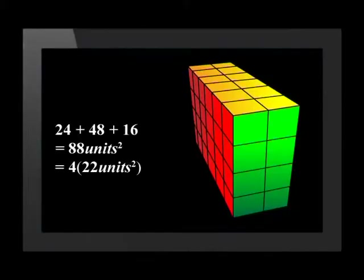So doubling all the dimensions of the original structure creates a surface area that is 4 times more than the surface area of the original structure. What is interesting here is that areas are measured in square units. The total surface area is a squared measurement. Squaring lengths that are doubled results in an area 4 times bigger.